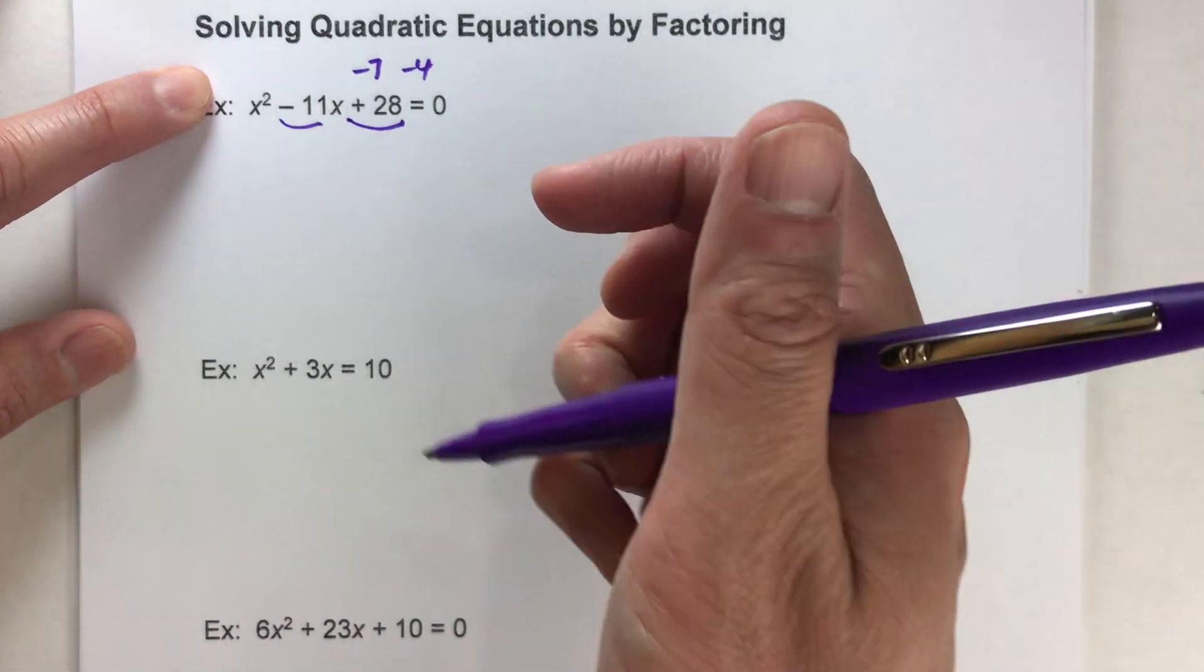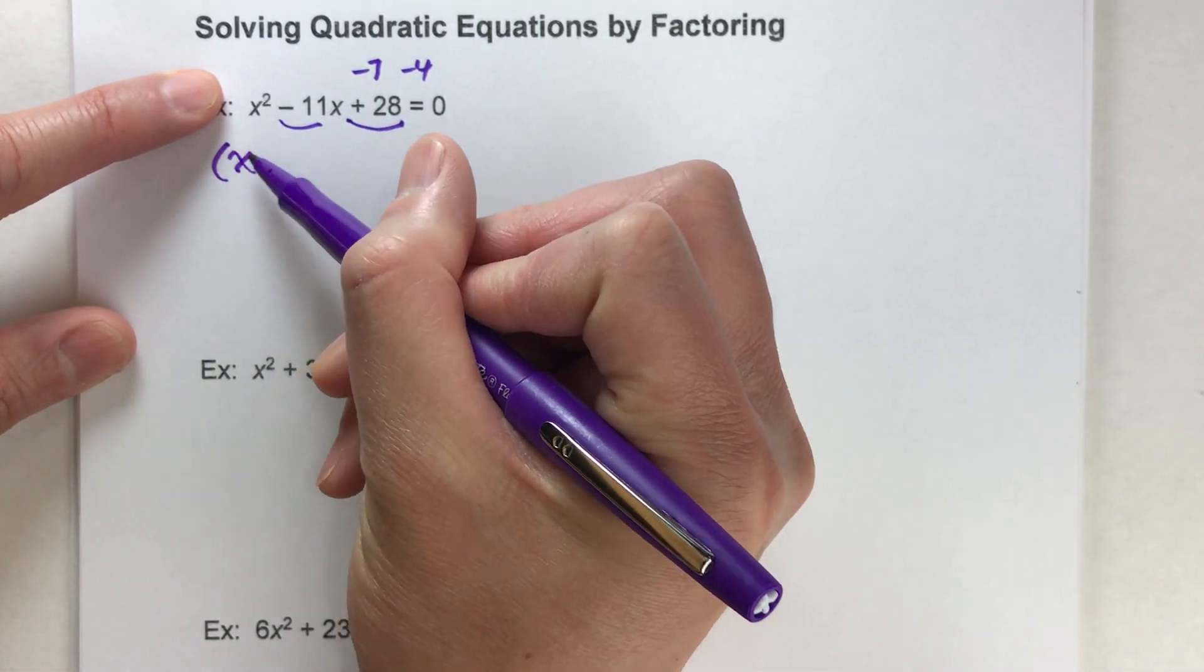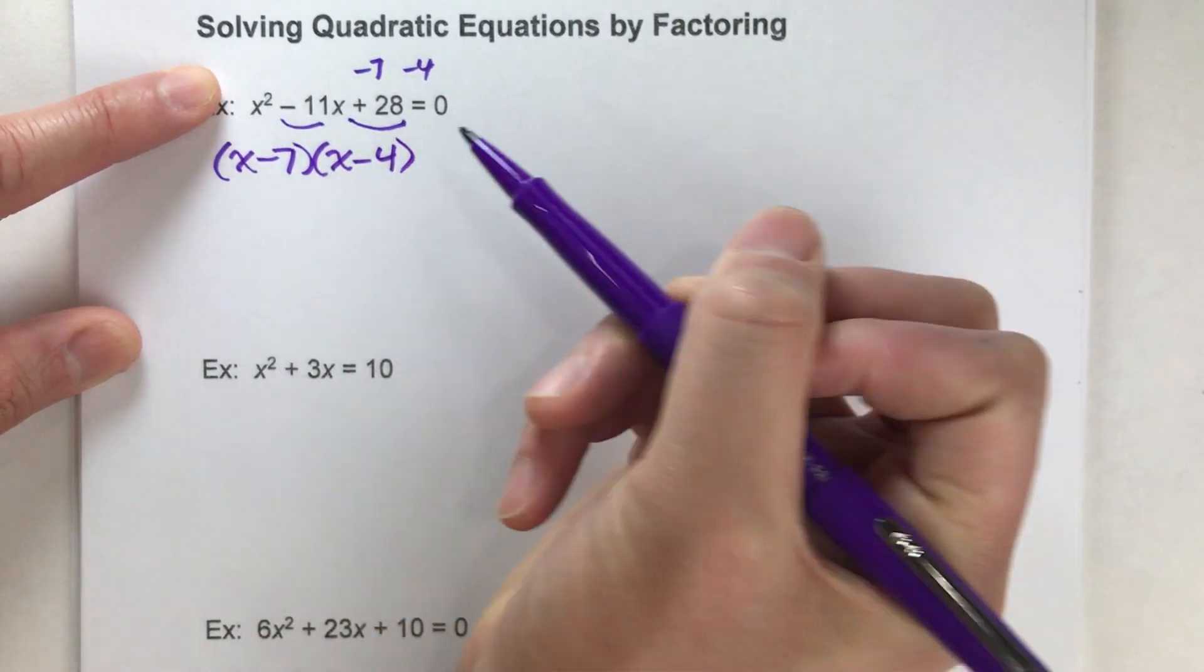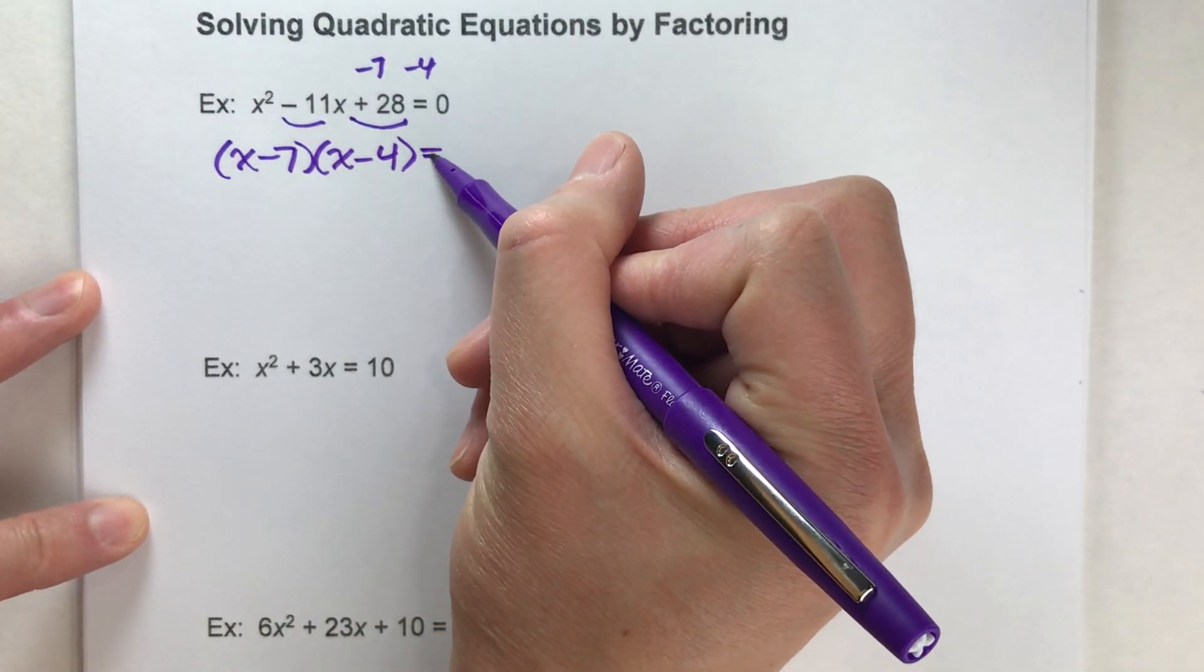So we can factor this as (x - 7)(x - 4). And of course it all still equals zero.